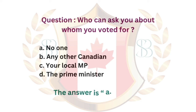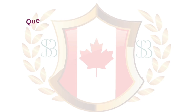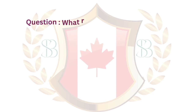Question. Who can ask you about whom you voted for? a. No one. b. Any other Canadian. c. Your local MP. d. The Prime Minister. The answer is a. No one.